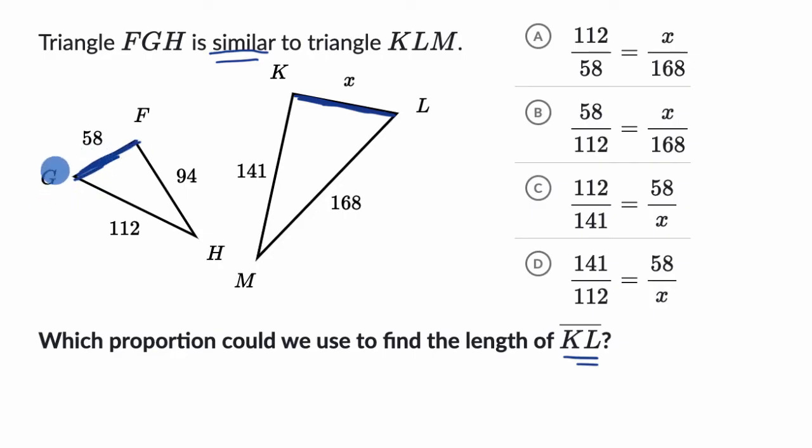But I want to make sure, because what we could look at is just even how they've defined the triangles or how they've written them. FG are the first two listed and KL are the first two listed. So actually this makes me confident that side FG corresponds to KL and these are both similar.